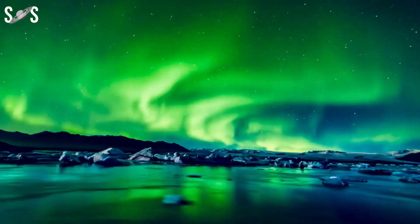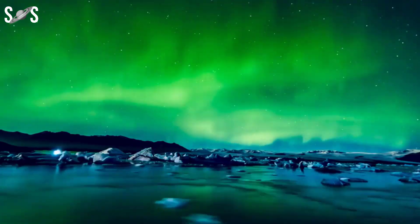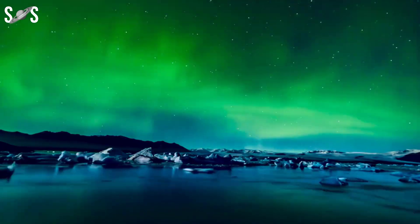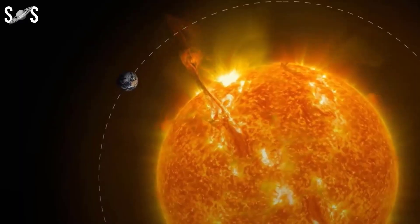Solar storms can lead to vibrant auroras, also known as the northern and southern lights. These colorful displays are caused by charged particles from the solar storm interacting with the Earth's atmosphere.